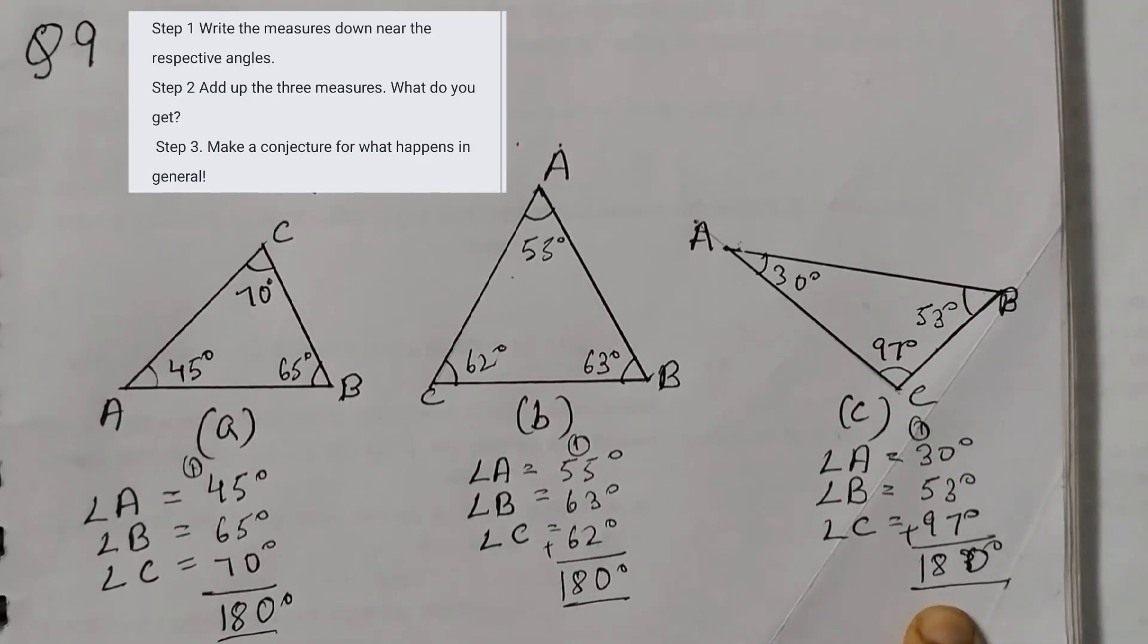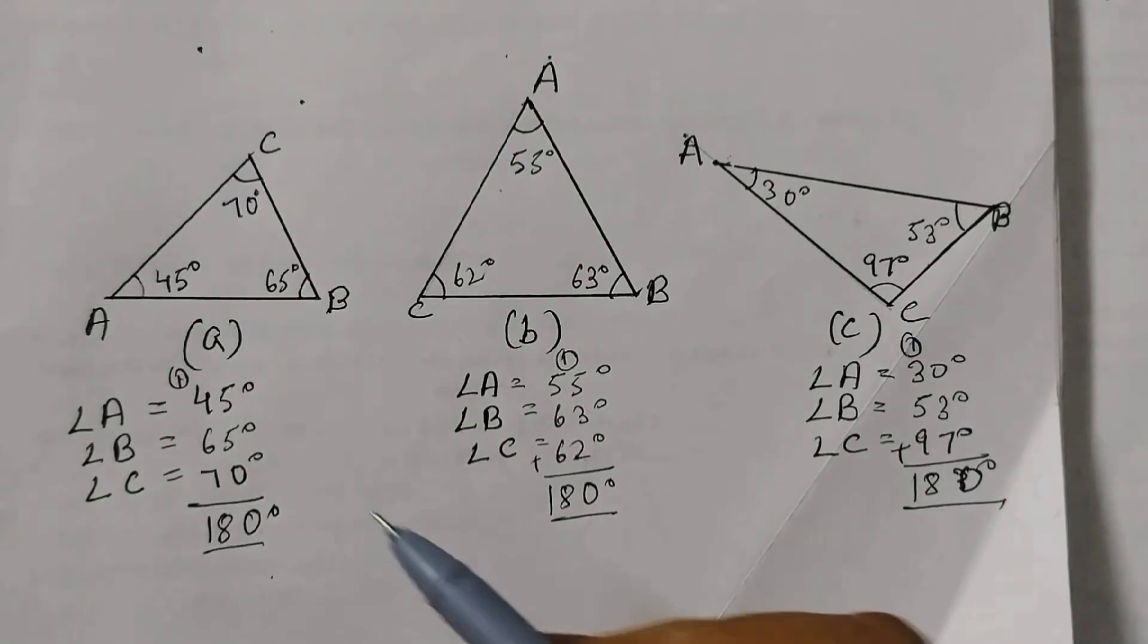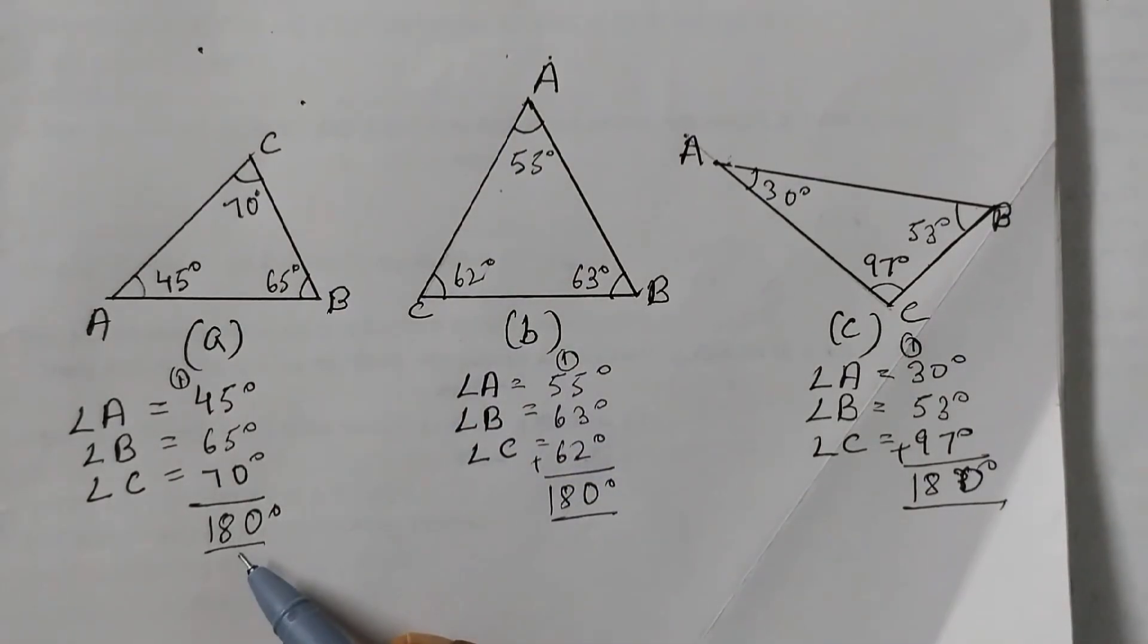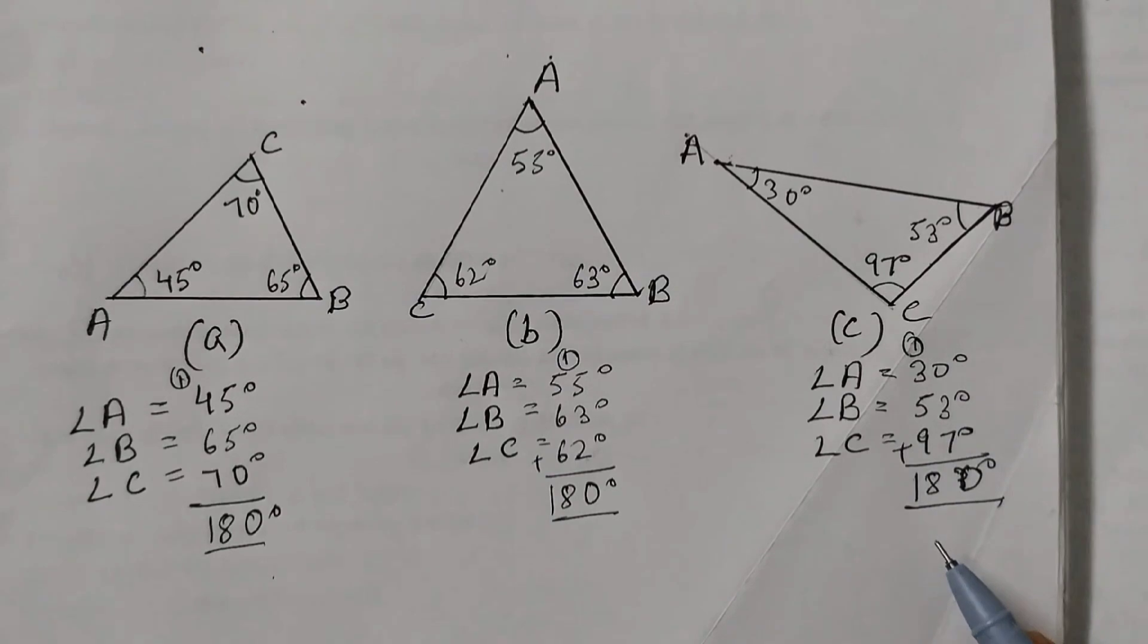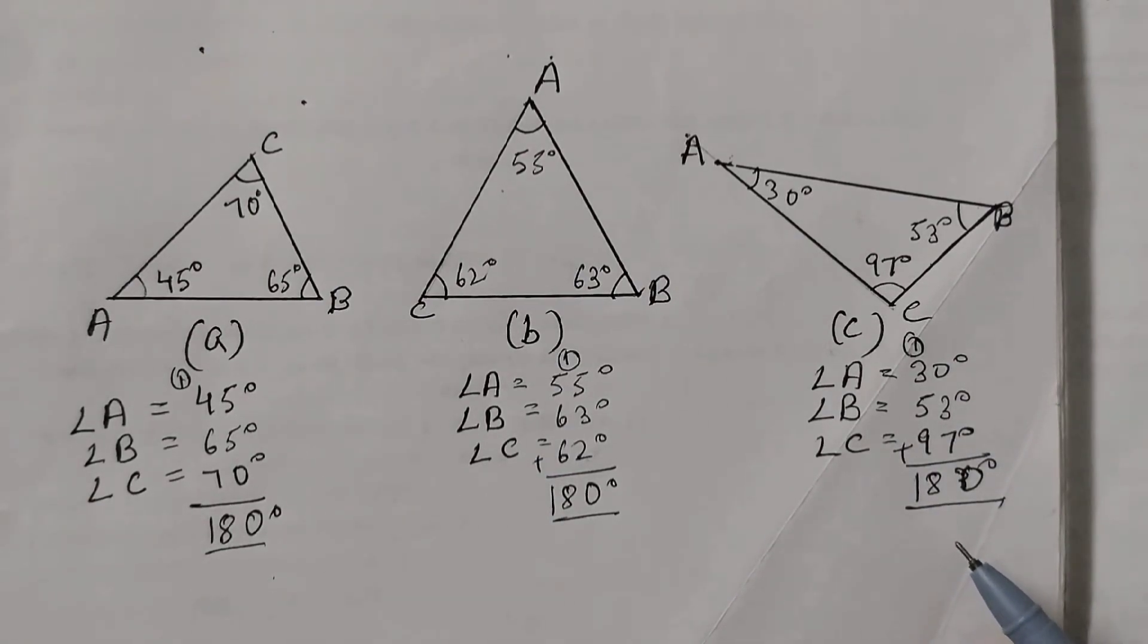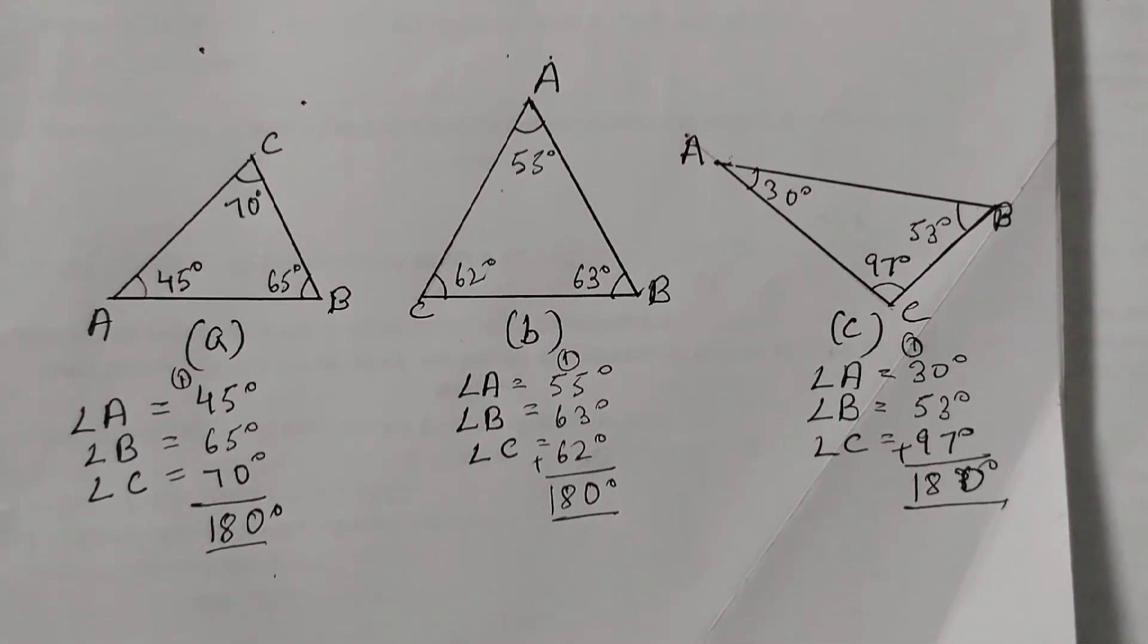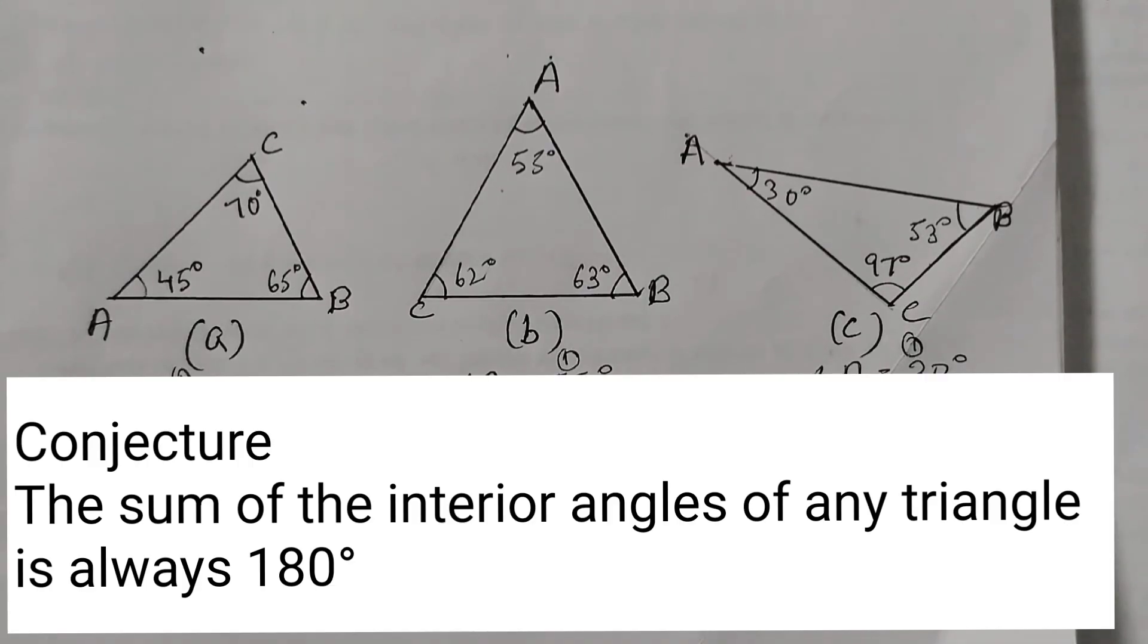So what is the conjecture that we can make? So we see that when we add up all the three angles in any of the triangles we are getting 180 degrees. And this is the conjecture that you need to write. Conjecture means it's a conclusion, it's an observation that you make after doing certain experiments. So we find out that the sum of the interior angles of any triangle is always 180 degrees. And this you are going to write as the conjecture.